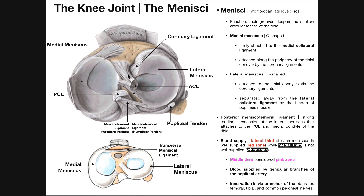We also have something called the posterior meniscofemoral ligament. It has two parts. This is a strong tendinous extension of the lateral meniscus that anchors it to the PCL and the medial condyle of the tibia. Following the lateral meniscus around: this portion is called the Humphrey portion, which anchors it to the medial condyle. The other part, called the Risberg portion, anchors the lateral meniscus to the PCL.